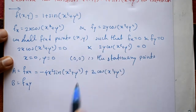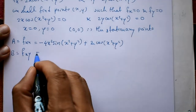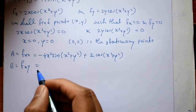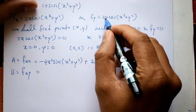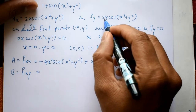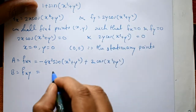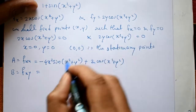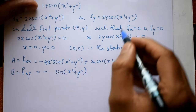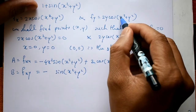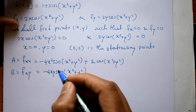For B = ∂²f/∂x∂y, differentiate ∂f/∂y with respect to x (or equivalently ∂f/∂x with respect to y). Treating 2y as constant and differentiating cos(x² + y²) with respect to x gives B = −4xy · sin(x² + y²).